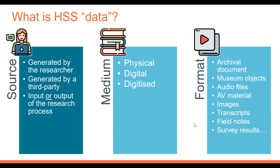Before we go any further, I wanted to make sure we're all thinking about what HSS data is in the same way. There are lots of different ways to define research data. When you're publishing in a journal and asked to share your data, that could be data generated by you the researcher — perhaps you created a dataset during your research process — but equally it could be data generated by a third party. So if you used something like an existing survey or census data, that's something you didn't create, but it does underpin the findings of your research. We can think of research data as being the input or the output of the research process.